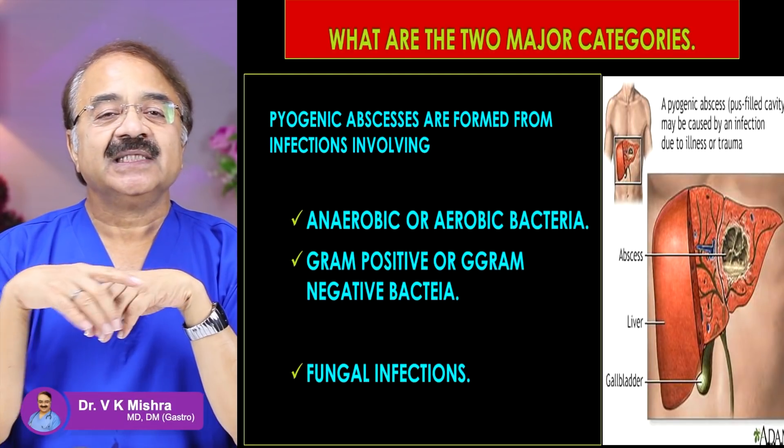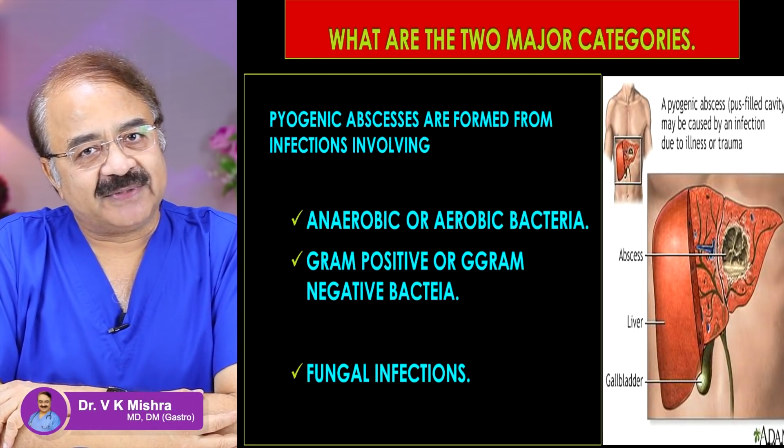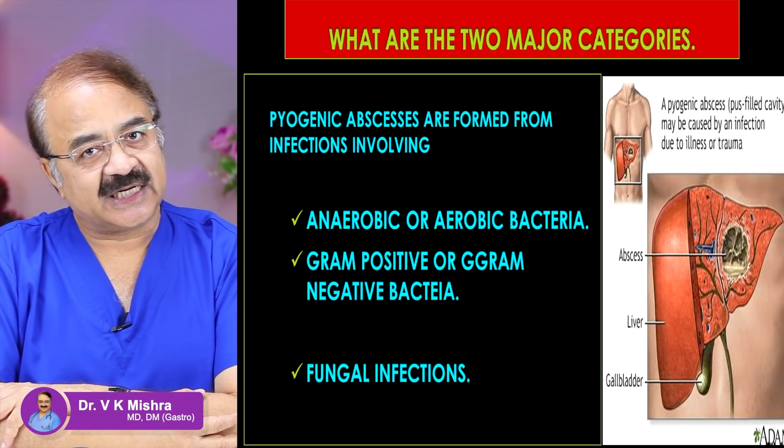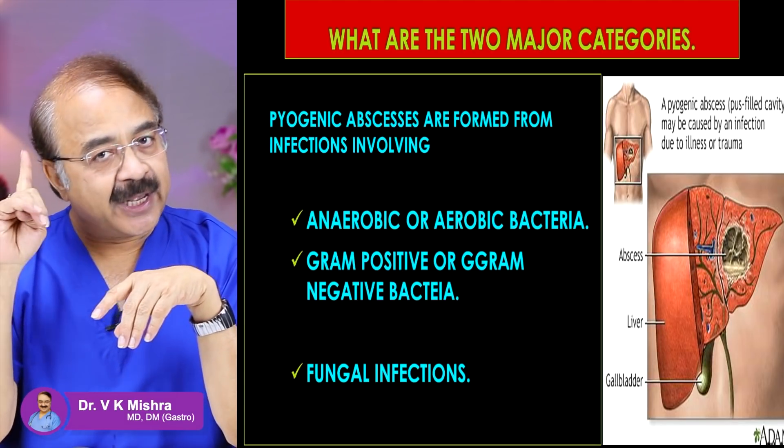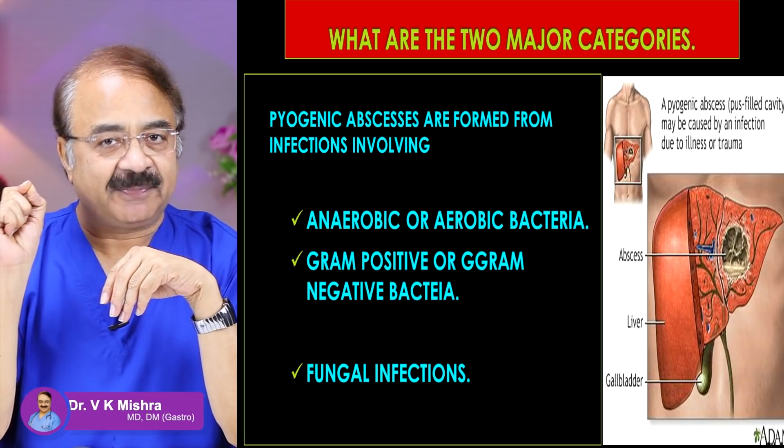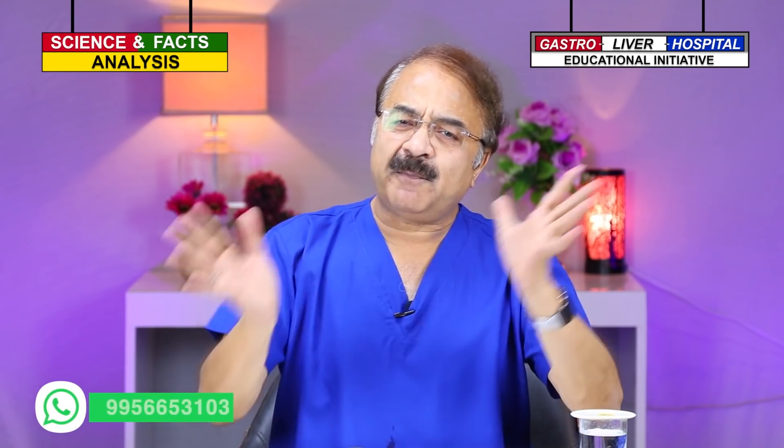When we talk about pyogenic liver abscess, this is a matter of bacteria — aerobic bacteria, which require oxygen, and anaerobic bacteria, which do not require oxygen. There are also gram-positive and gram-negative bacteria. These different categories of bacteria can be found in pyogenic liver abscess.